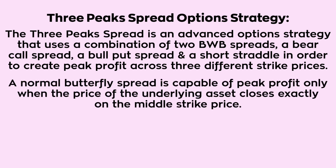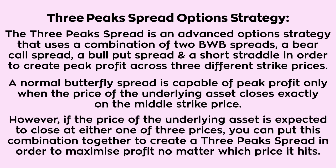A normal butterfly spread is capable of peak profit only when the price of the underlying asset closes exactly on the middle strike price. However, if the price of the underlying asset is expected to close at either one of three prices, you can put this combination together to create a three-peak spread and maximize profit no matter which price it hits.